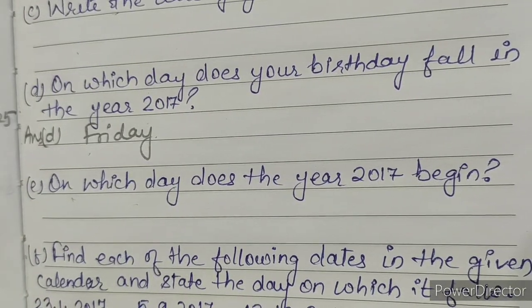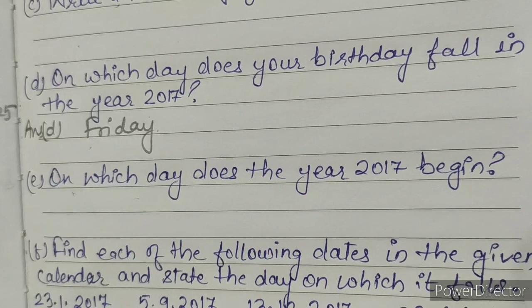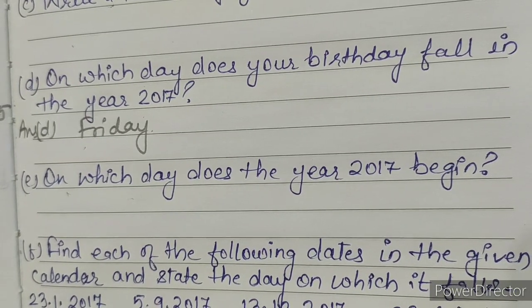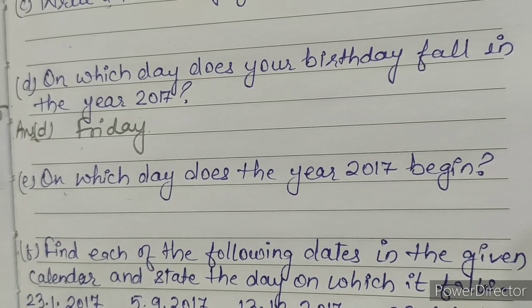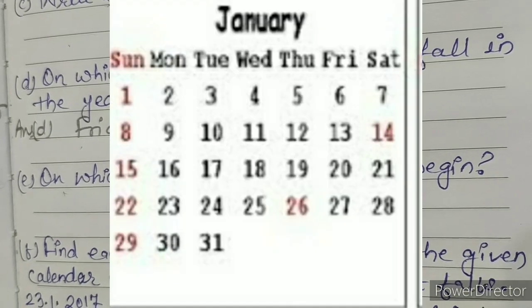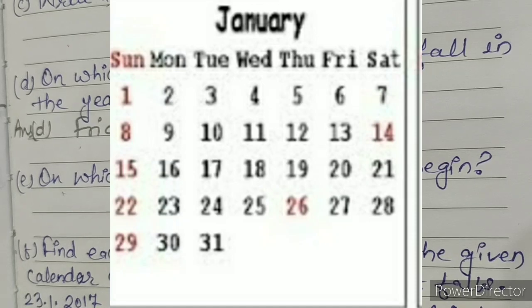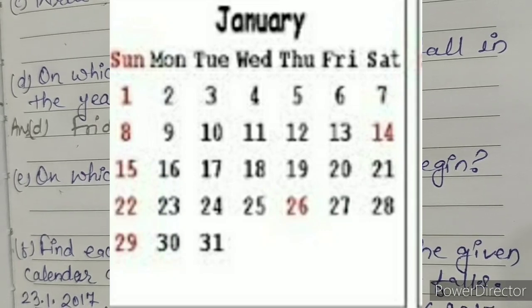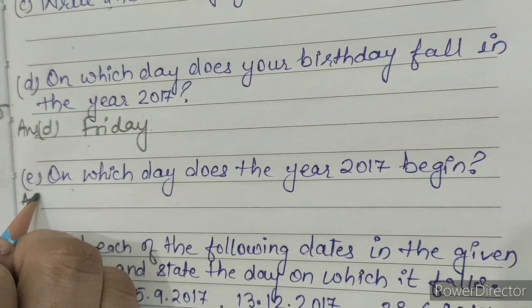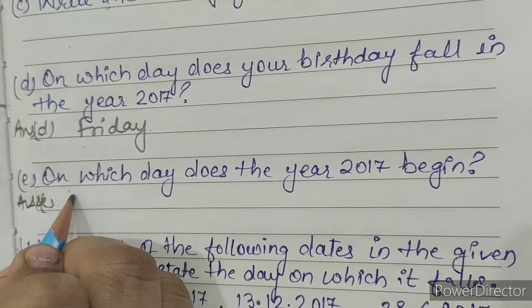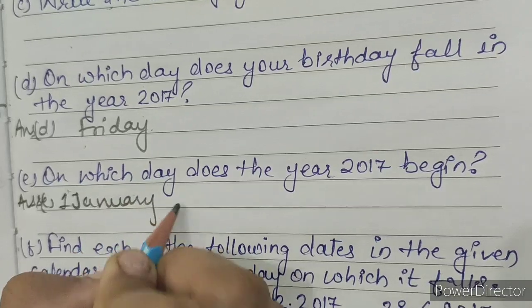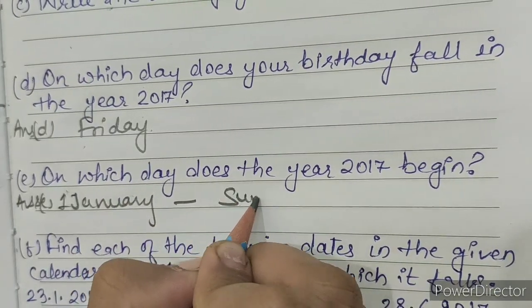E. On which day does the year 2017 begin? Looking at the calendar of 2017, 1st January 2017 falls on Sunday. So our answer is Sunday.